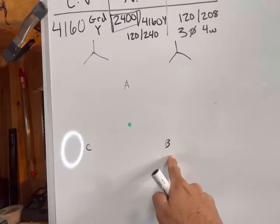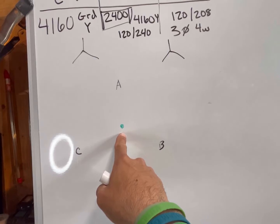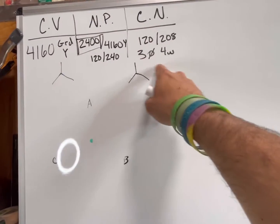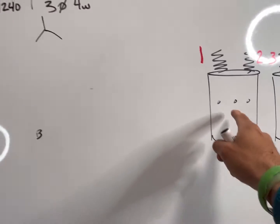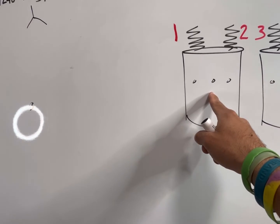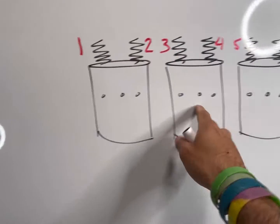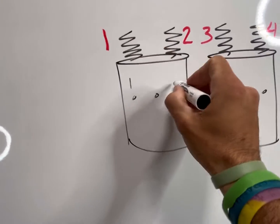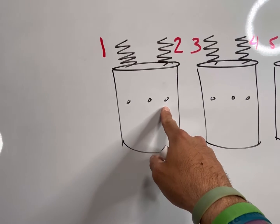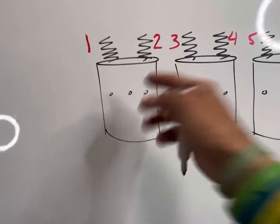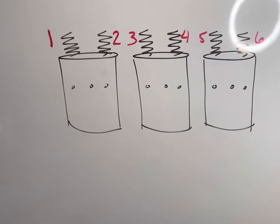I've got my primary circuit — it's a 4160 grounded Y, so A, B, and C phase with grounded neutral in the middle. With this transformer bank, a 120/240 with a 120/208 secondary hookup, I'm going to have to parallel the secondary coils of these transformers. Since I have to parallel the secondary coils, rather than having my 1 and 2 on the outside two bushings, I'm going to have to use my X1 and X2 bushings.